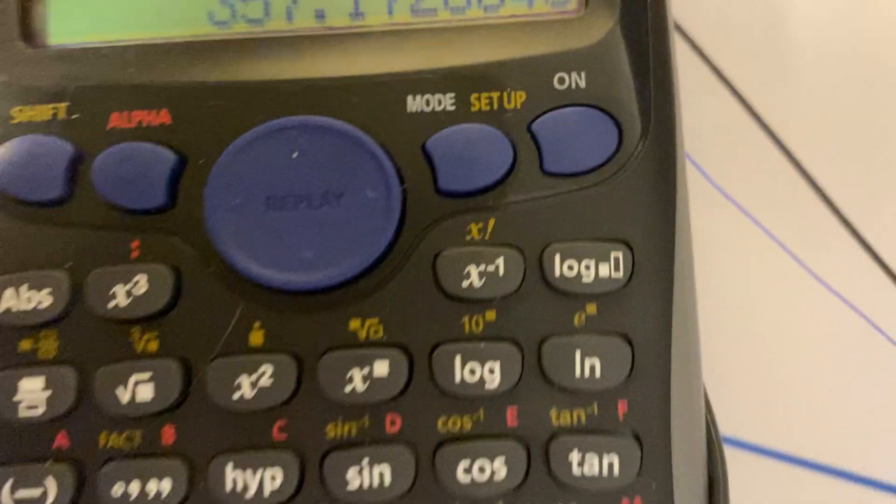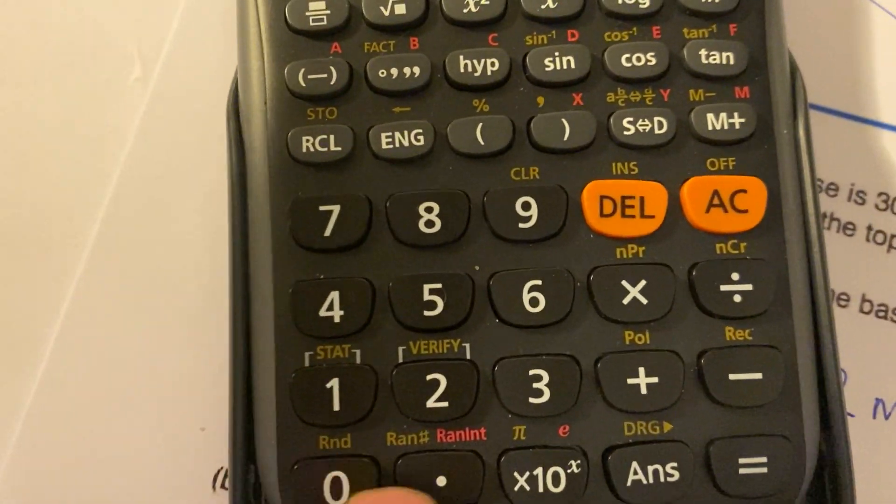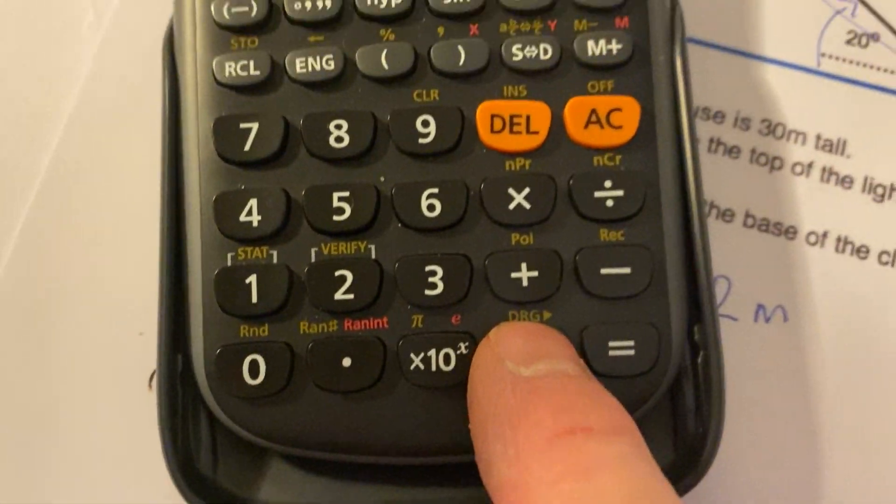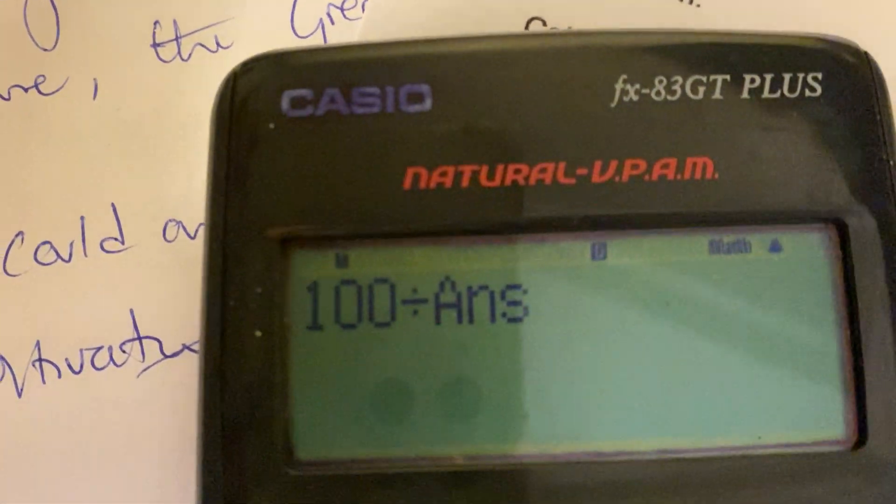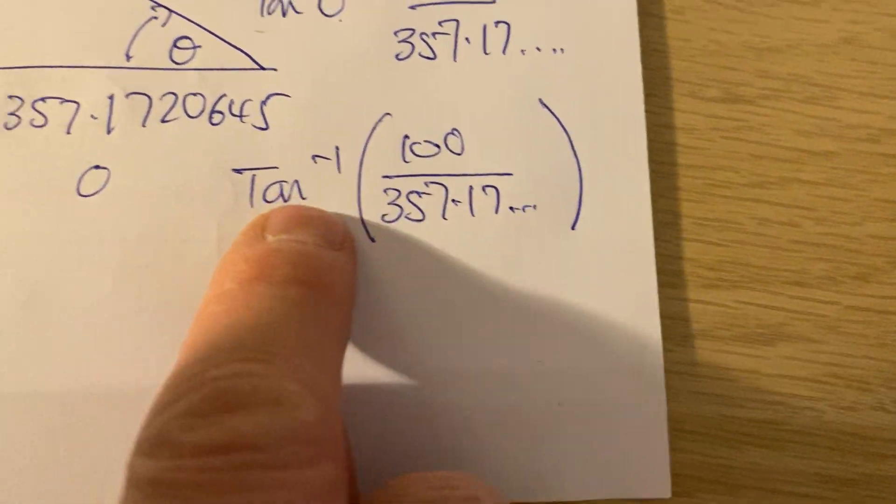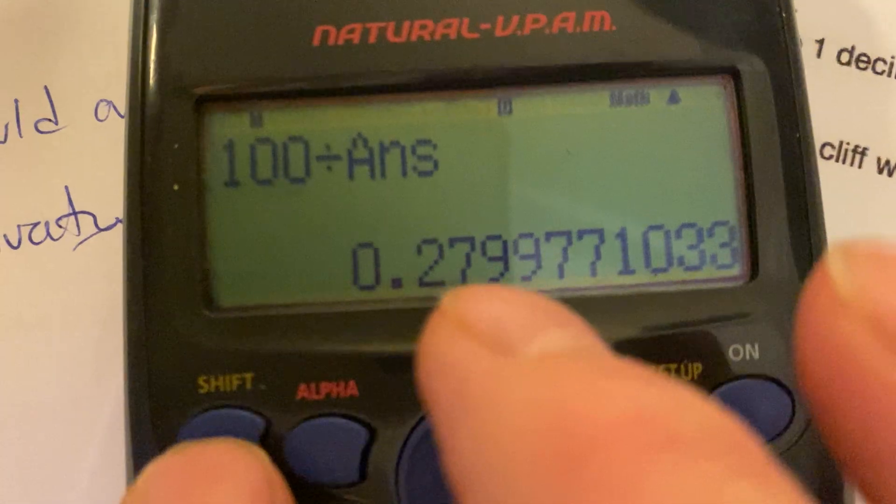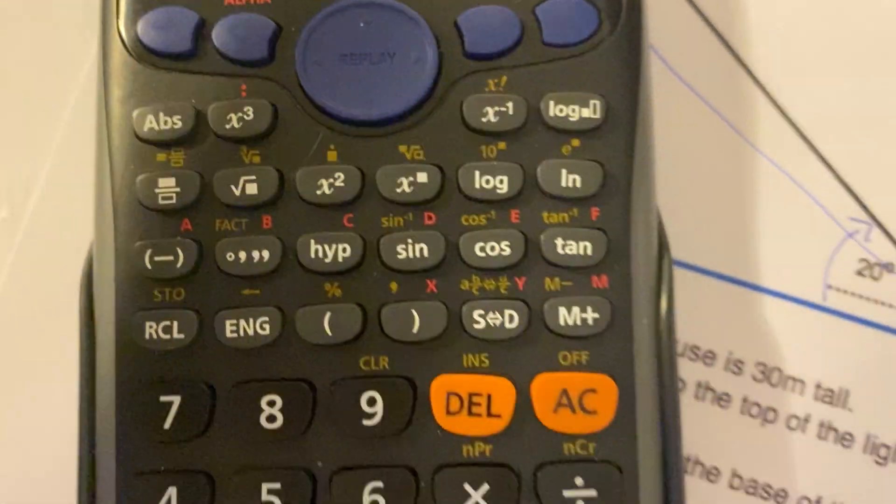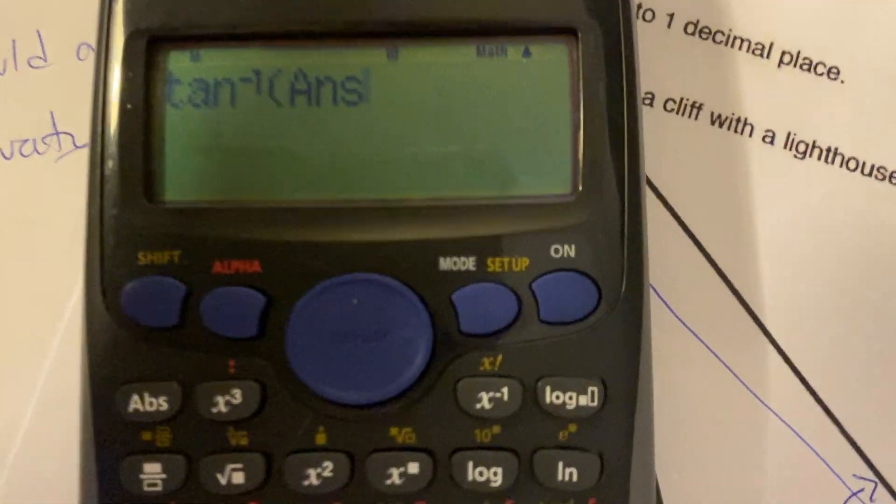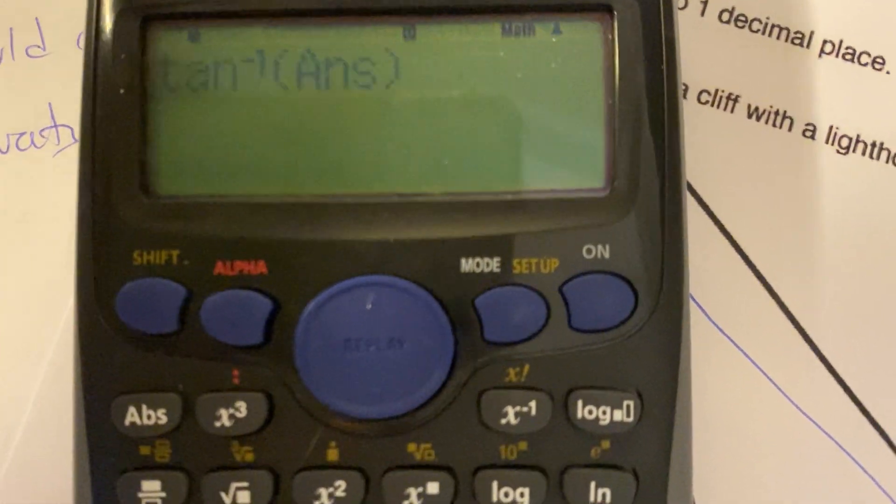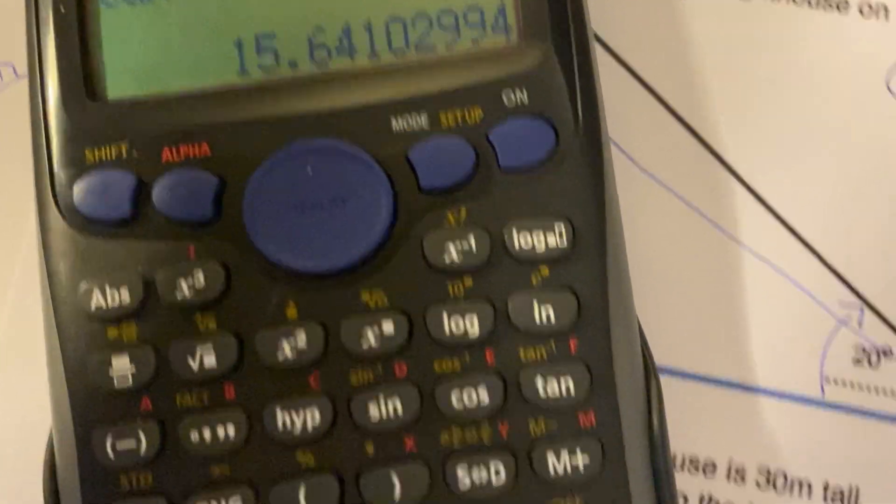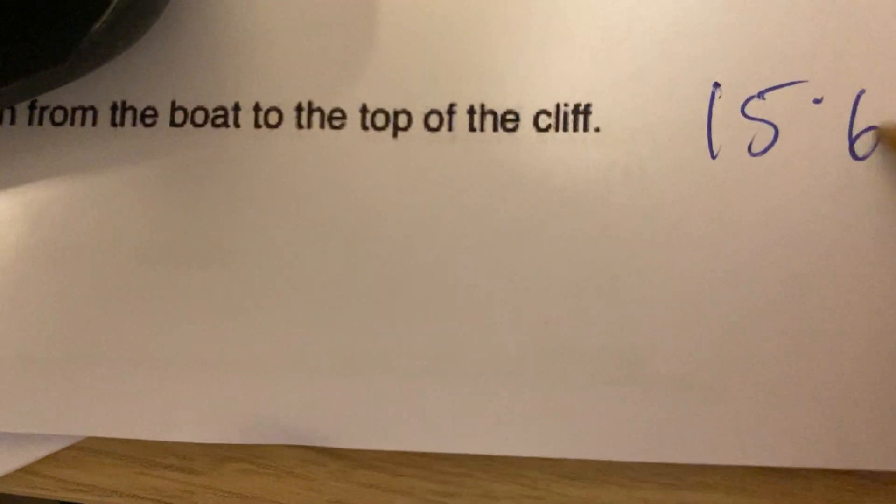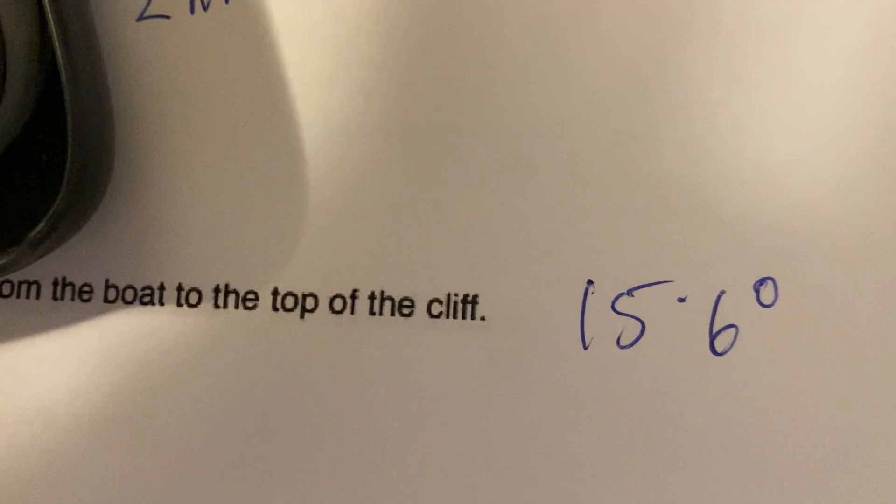All I need to do now is 100 divided by that answer. That gives me that bit there. Now I need to inverse tan, so I do shift tan because that does the inverse of it. Answer again, close bracket, equals, and there we go: 15.6 degrees. So 15.6 degrees. Makes it really nice.